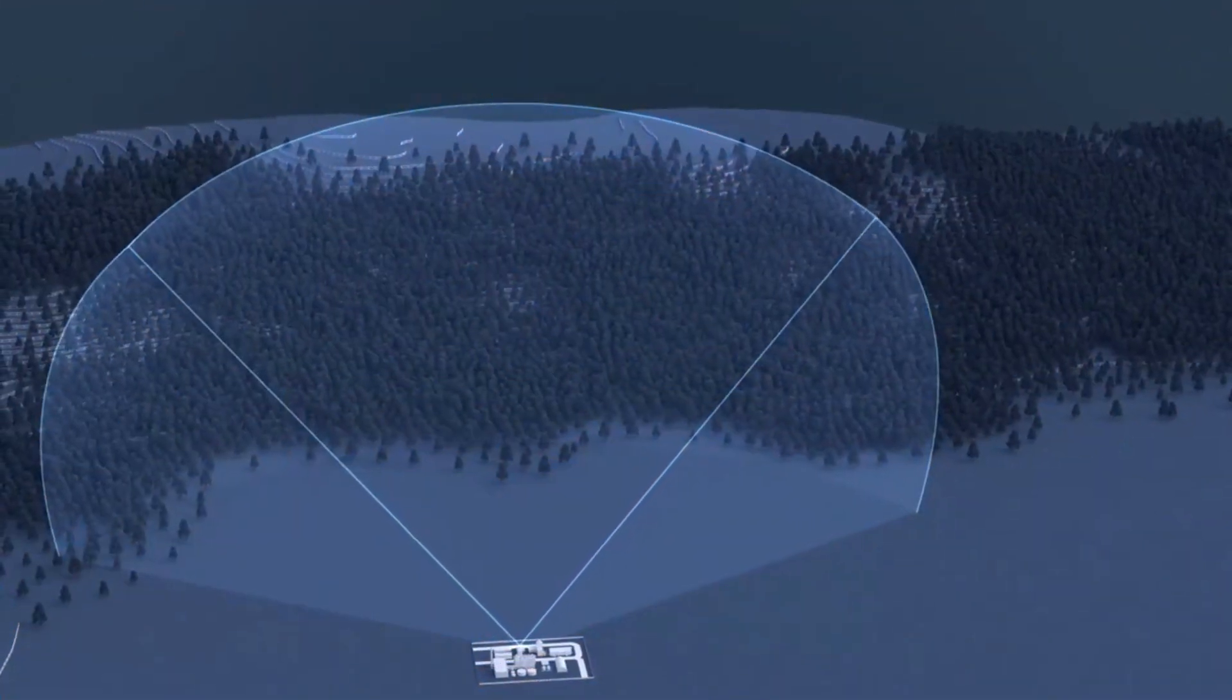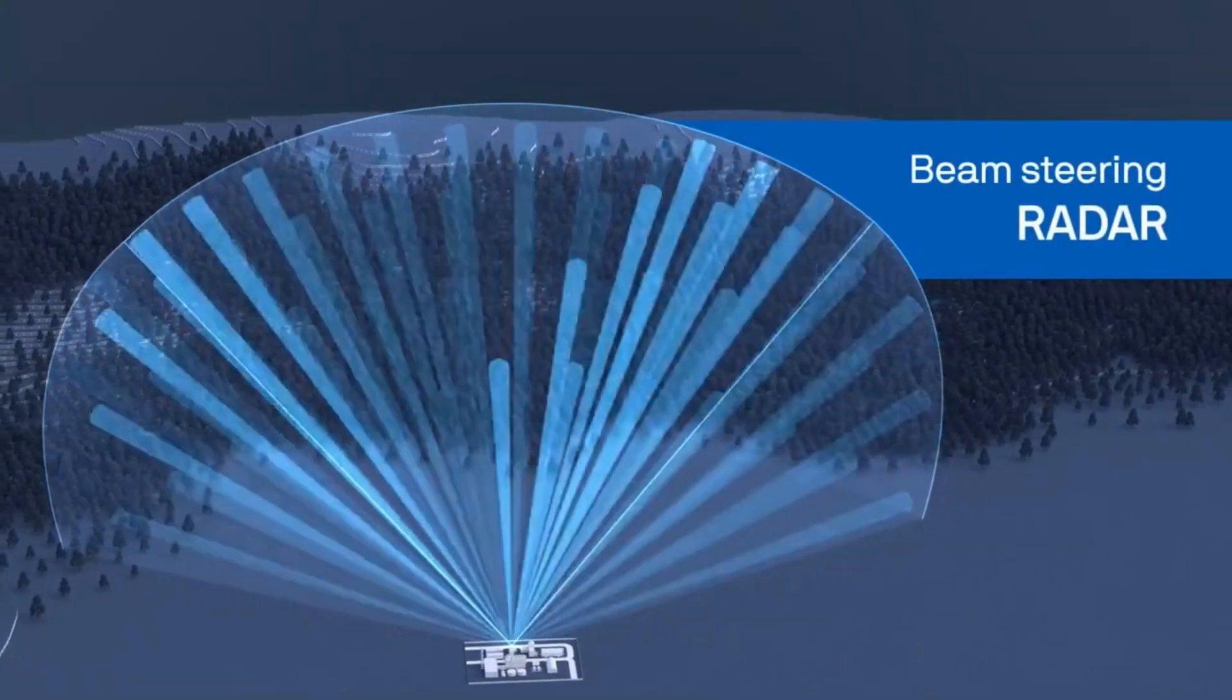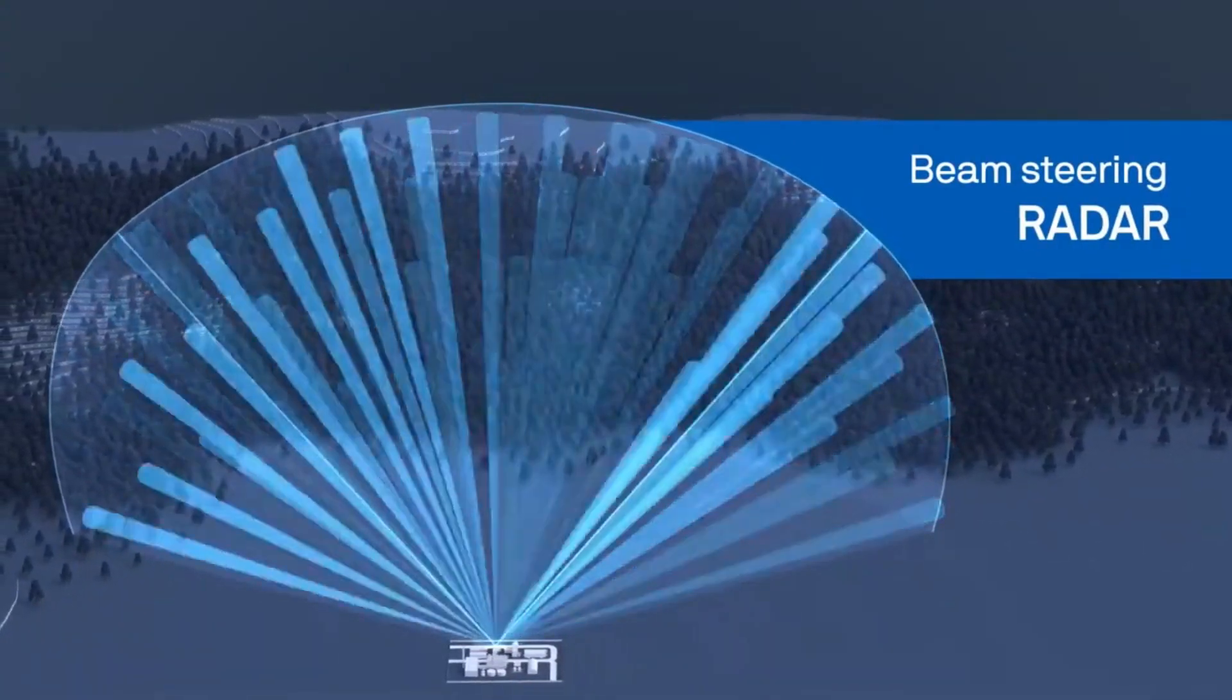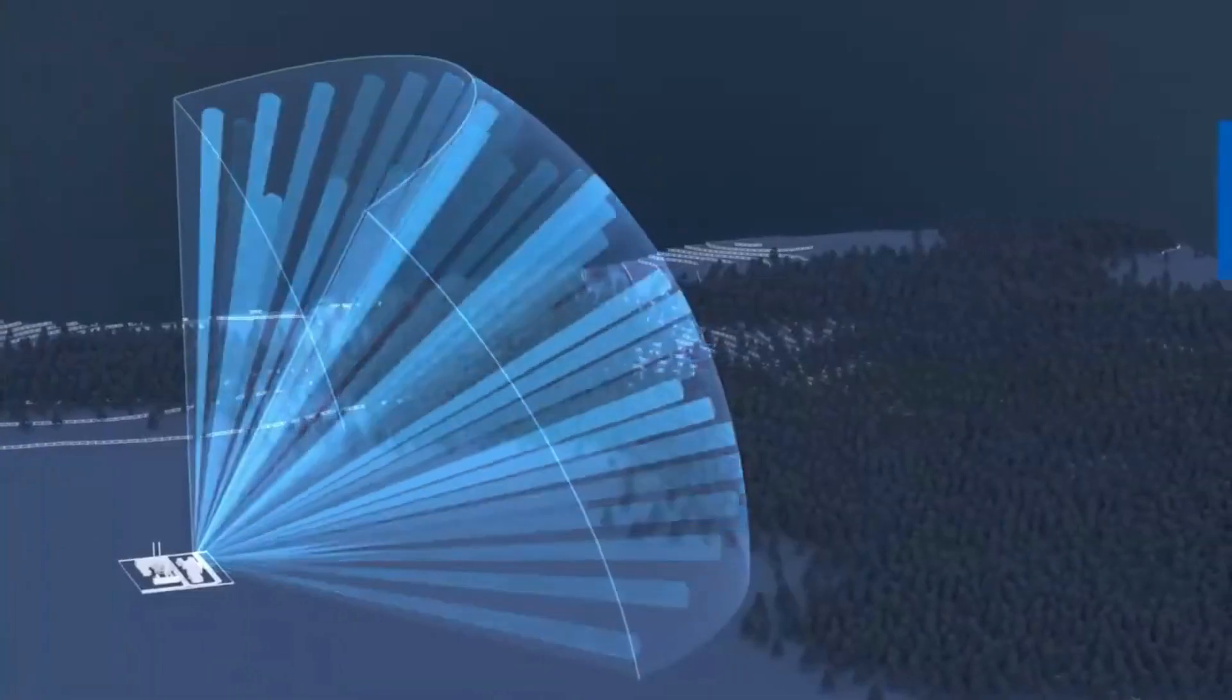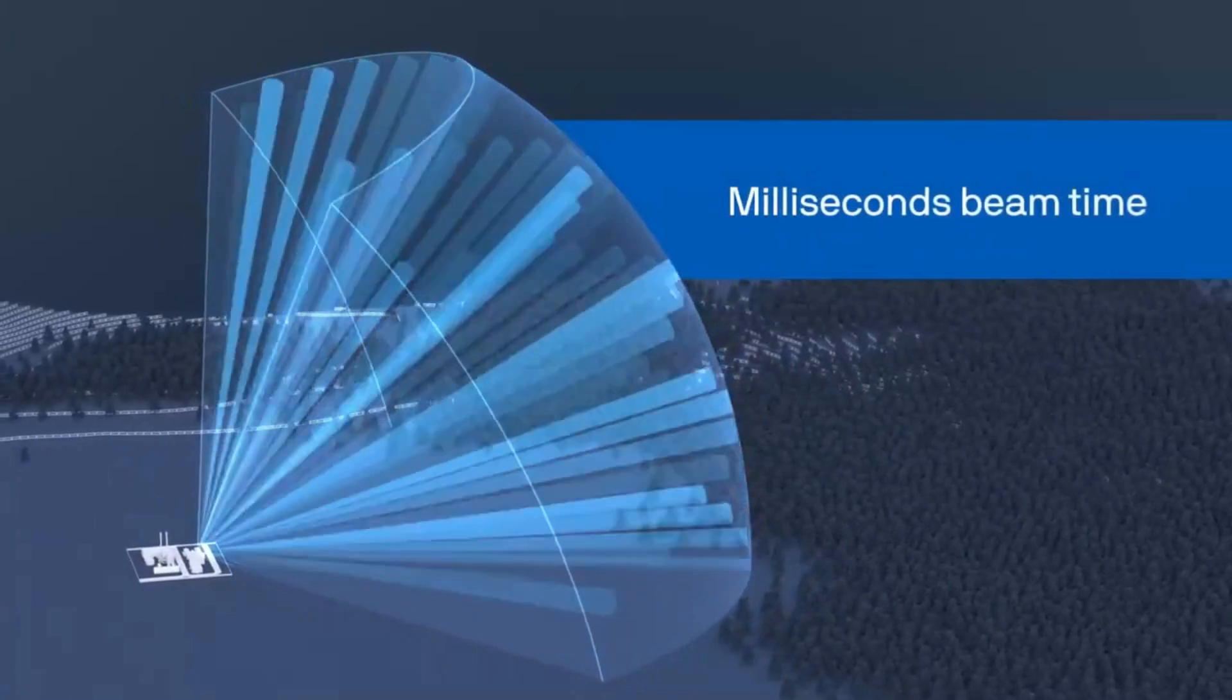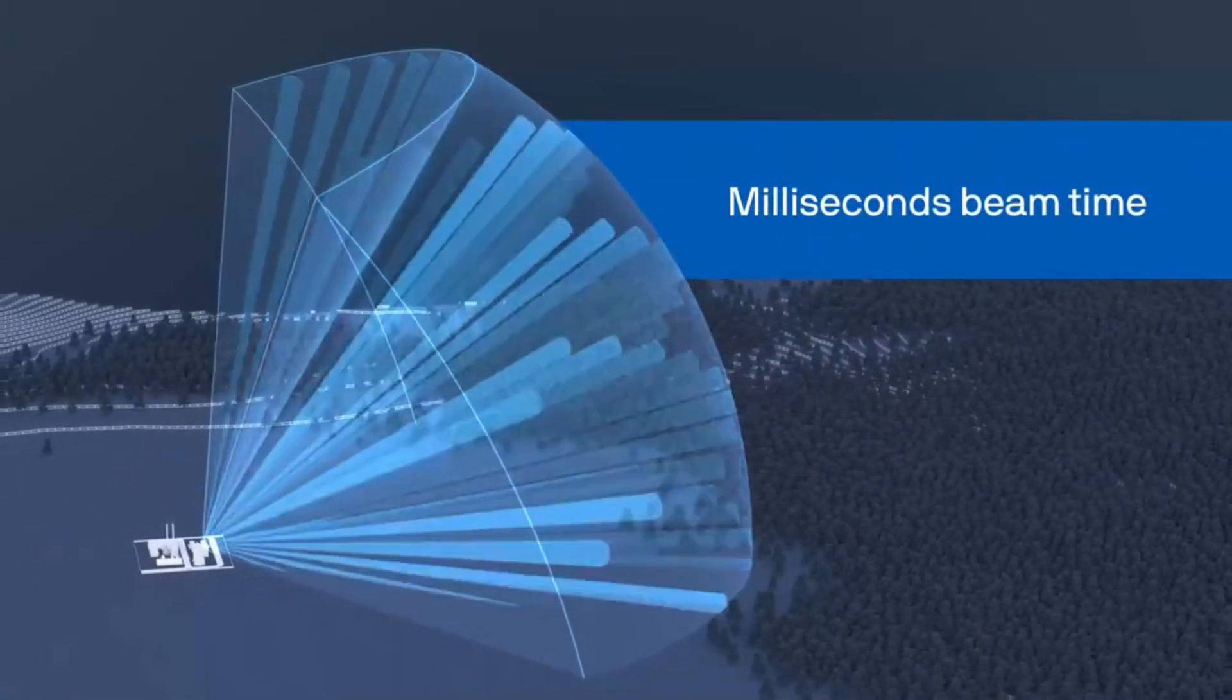Echoguard's beam steering technology continuously directs radar energy in tight conical beams across a wide field of view. The radar scans 3D space with over 2,500 unique pointing directions, each beam taking mere milliseconds to interrogate an object.